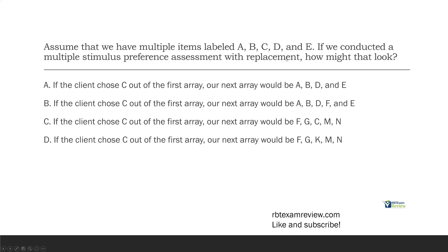So if we have our five items A, B, C, D, and E, we know whatever item the client picks, we're going to replace that item and then change out the other four. Answer A: if the client chose C out of the first array, the next array would be A, B, D, and E. The issue here is we're taking away C, which was chosen — that's a multiple stimulus assessment without replacement, not what we're looking for.